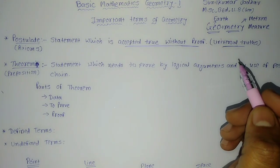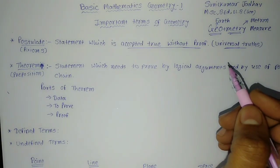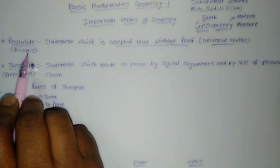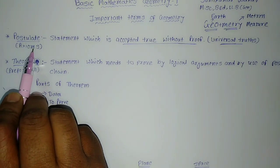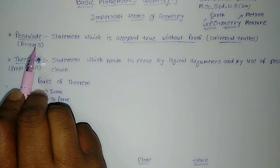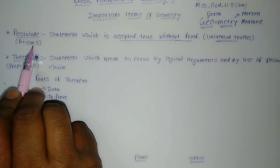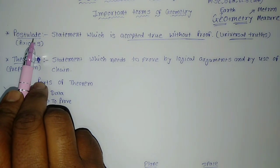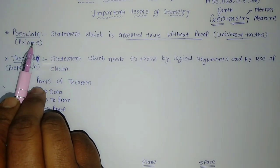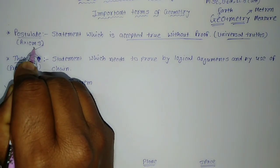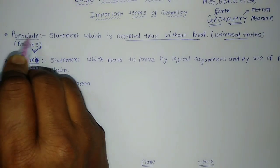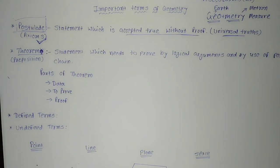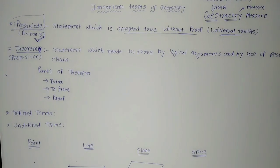Axiom is a term also used in geometry for postulate, but postulate is the term we use specifically in geometry. An axiom is also a universal truth that we can accept as true without any argument or proof, but axiom is a general term used in mathematics overall, while postulate is a specific word used only in geometry. So in geometry, when we use the word axiom or postulate, they are considered similar.